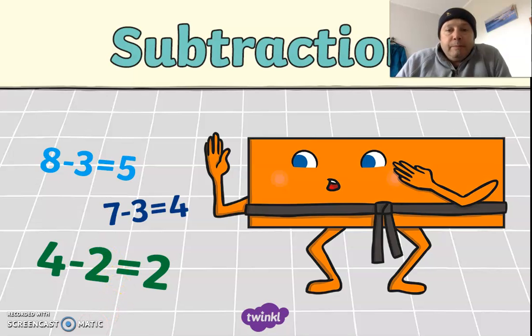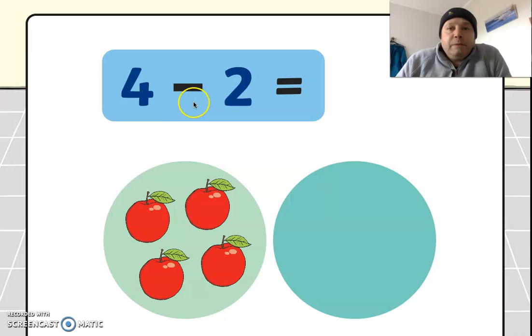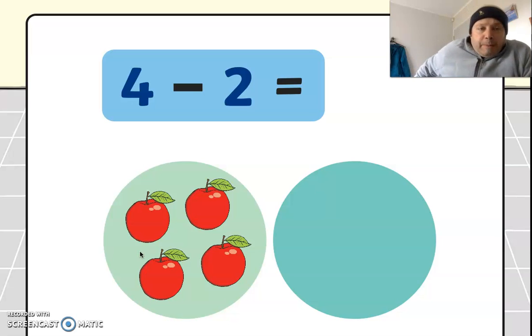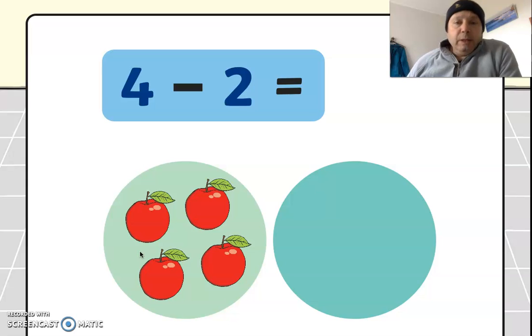So the first one here, we've got four apples, so you may have four blocks. The question is four minus two, or four take away two, or four subtract two. Give me a few seconds to see if you can work that out - maybe use the blocks to help you or your lego or your pencils - and then if you could write down the answer as well, that would be great.